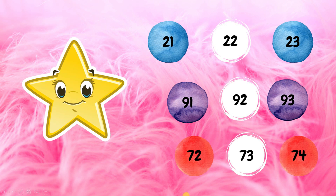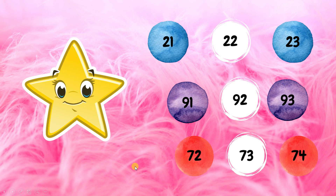If they give you 21 and 23 and you have to tell what comes in between, there are two methods. First, take 21 and add one — you get 22. Or you can subtract one from the second number, 23, and you also get 22. So it is your choice which method you use.